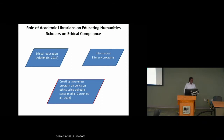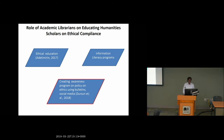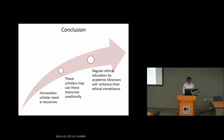The librarian is expected to educate humanities scholars through information literacy programs, user awareness, and by creating awareness about the policies instituted in the university or organization. The academic librarian is expected, on a regular basis, to make information relating to the ethical use of information materials available to digital scholars, so that they know how to avoid violating any ethical rules while using electronic information resources.